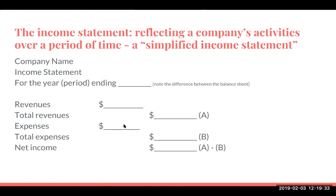What exactly is an income statement? The income statement reflects a company's activities over a period of time. This is a very simplified one — you have the company name, income statement for the year or period ending blank. Notice that this is different than the balance sheet. The balance sheet was a snapshot in time, telling us on a particular day what is our cash, equipment, and asset, liability, and equity balances. When we're dealing with the income statement — revenues and expenses — we're dealing with a period of time from January 1st through December 31st: how much did we generate in total revenues, what did those revenues cost us in expenses, and how much did we end up making or losing?